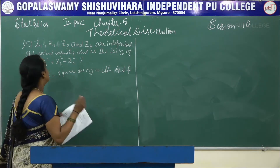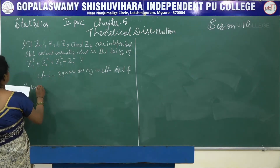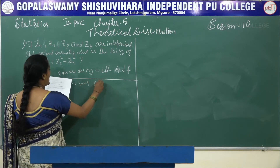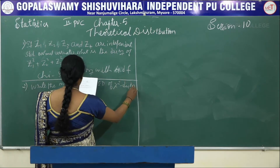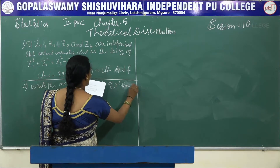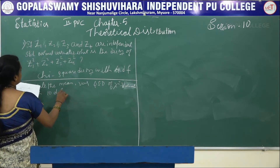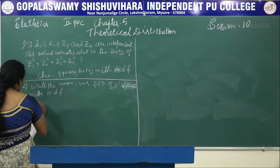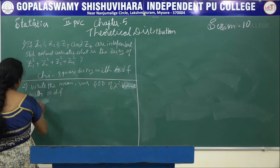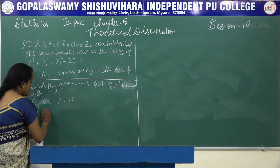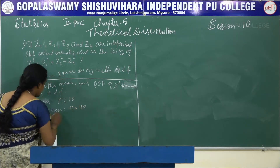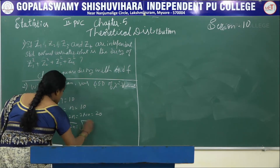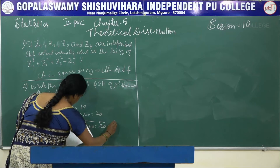Problem 2: Write the mean, variance, and standard deviation of a chi-square variate with 10 degrees of freedom. Given n = 10: mean = n = 10; variance = 2n = 2 × 10 = 20; standard deviation = √(2n) = √20 = 4.47. You may get this type of problem for 2 marks in your examination.